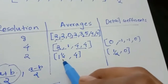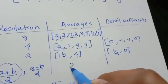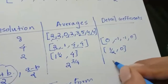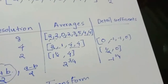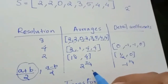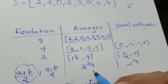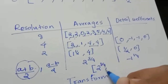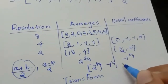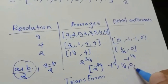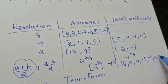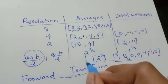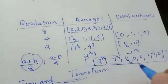Now with 2 elements in the vector, resolution entry is 2. Next, (1.5 + 4) / 2 = 2.75, and (1.5 - 4) / 2 = -1.25. So the resultant reduced vector after using Haar wavelet transform is: 2, 3/4, -1, 1/4, 1/2, 0, 0, -1, -1, 0. This is the result of the forward transform.